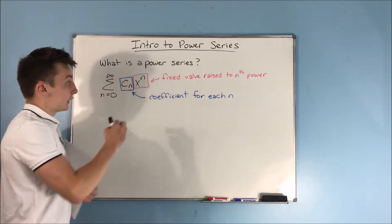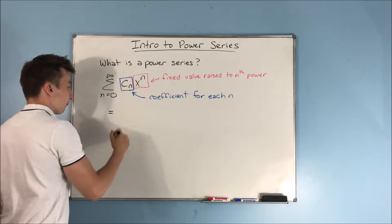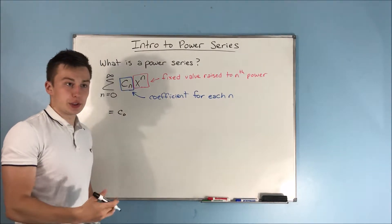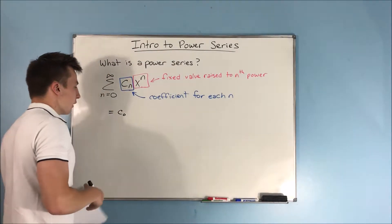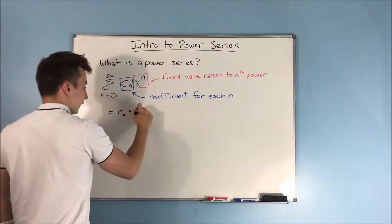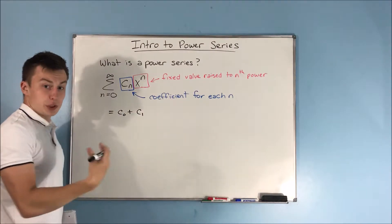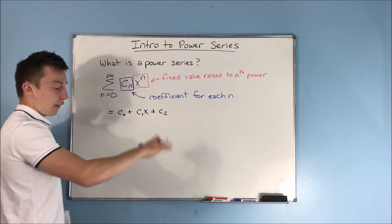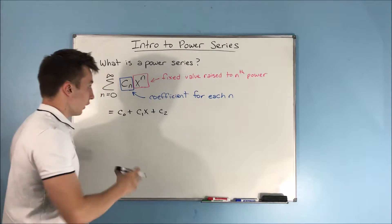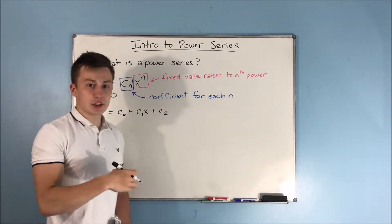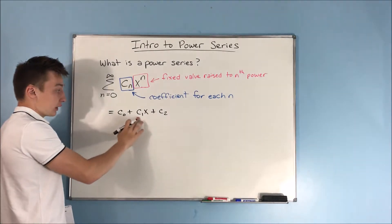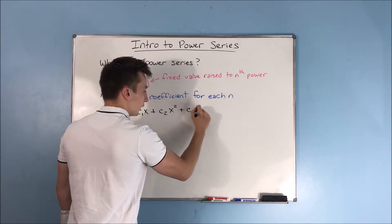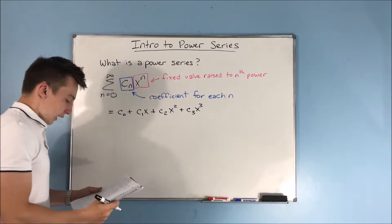If you were to write this series out, you would get for your first term c sub zero times x to the zero, which is just one. Next you'd have c sub one times x to the first power, which is just x. Then c sub two times x squared, c sub three times x to the third power, and so on — these are just different coefficients, something with n's in it, and when you plug in n you get some coefficient.